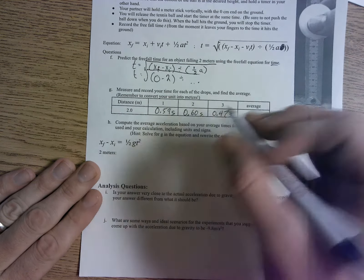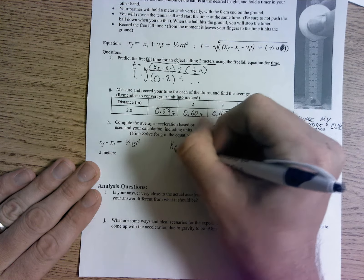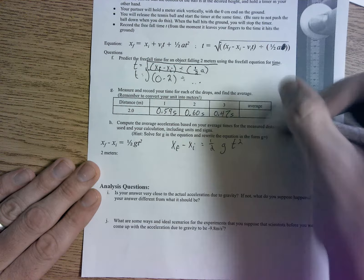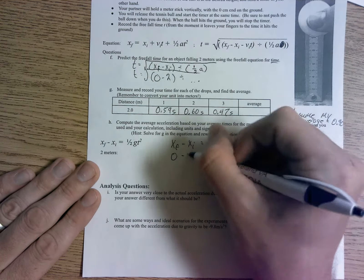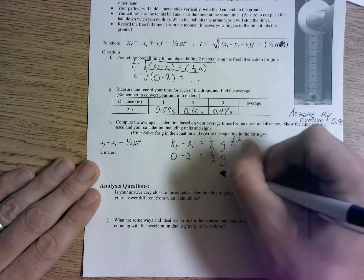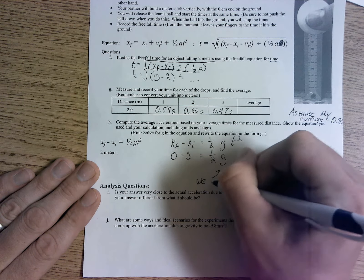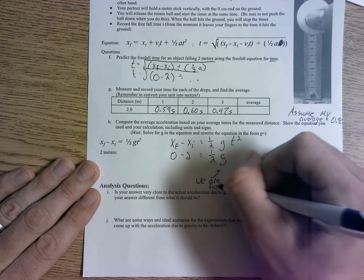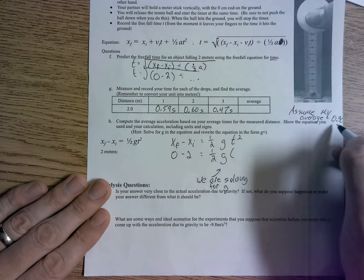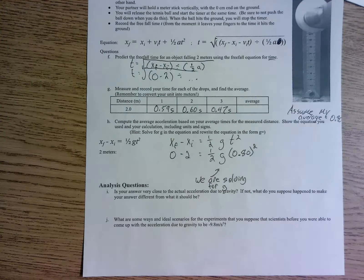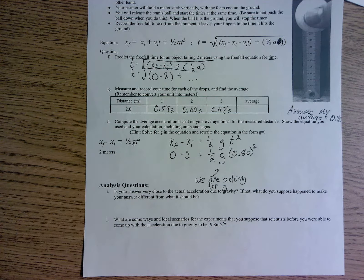So your x final, remember your x final is zero. Your x initial was 2. It goes 1 half times g. Well, g is what we're calculating, we're solving for g. And t is what we got here. T is, in my case, 0.8, it won't be for you, or maybe it will, but not for most of you, it shouldn't be. All right, 0.80 squared. Well then we're going to get a value for that.